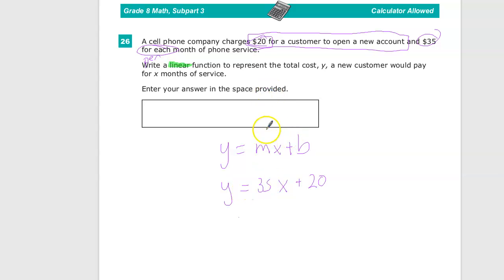So I can find out that in the first month, the customer will pay $35 times 1 plus $20. That would be $55. In the second month, they do 35 times 2. So total for two full months of service, that would be $70 plus 20 more, which is $90.